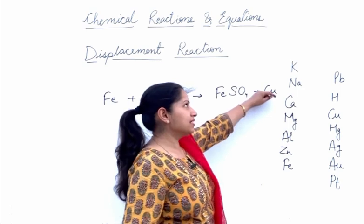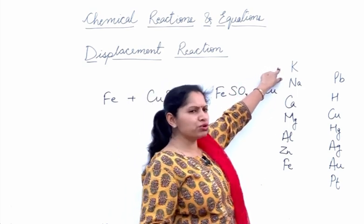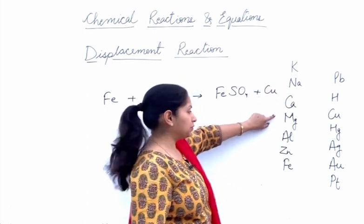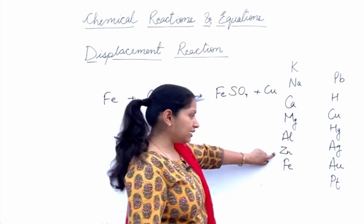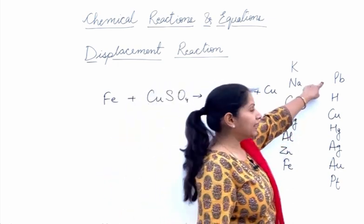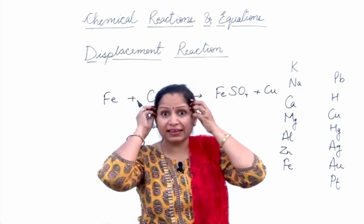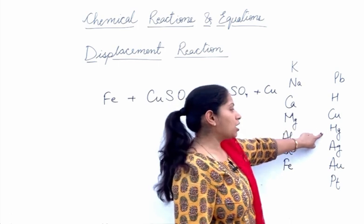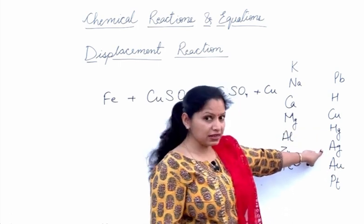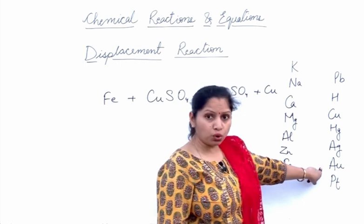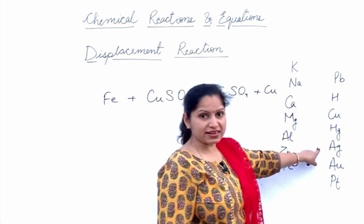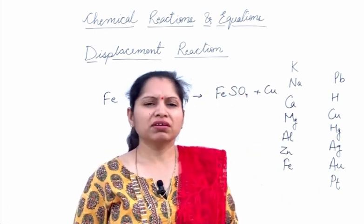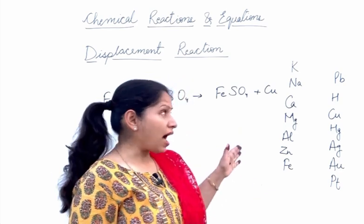The reactivity series starts with potassium as the most reactive element, then sodium, calcium, magnesium, zinc, iron, lead (Pb stands for lead), hydrogen, copper, mercury, silver (Ag stands for silver), gold (Au stands for gold), and finally platinum (Pt stands for platinum).